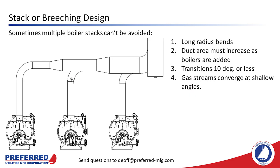Sometimes multiple boiler stacks can't be avoided — for instance, when there's a historical brick stack that can't be torn down. Multiple boiler stacks must follow the single stack rules plus a few more: use long radius bends to change directions; duct area must increase as flue gas streams are added together to keep velocity under 30 feet per second; transitions should be conical and less than 10 degrees on each side; and flue gas streams should converge at shallow angles — think on-ramps and merging lanes, not four-way stops. The elbows are drawn with the correct R/D of 2.0.